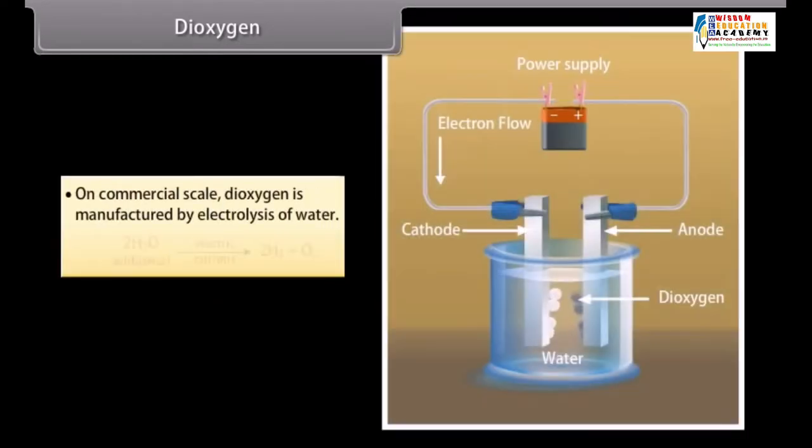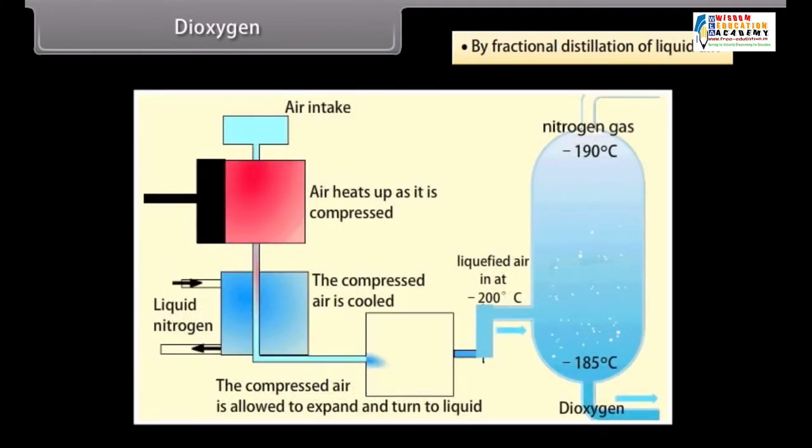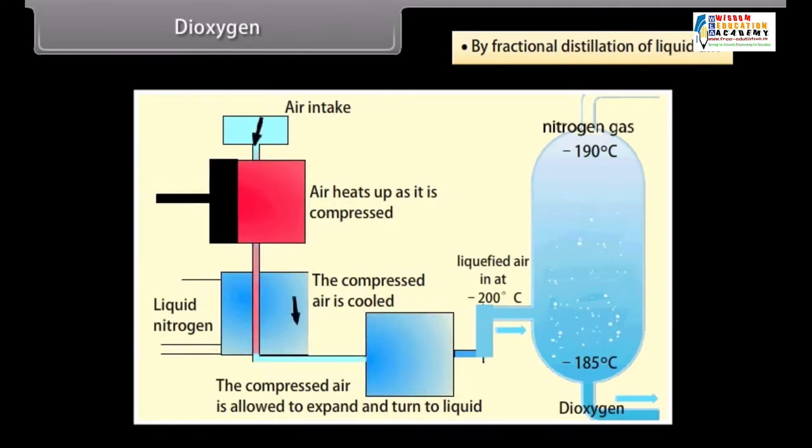On commercial scale, dioxygen is manufactured by electrolysis of water. By fractional distillation of liquid air. When liquid air is distilled, nitrogen with lower boiling point distills out first leaving behind practically pure dioxygen.